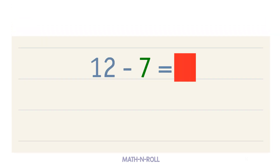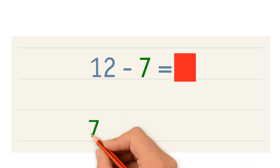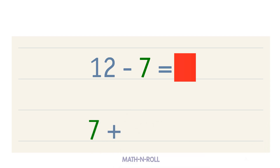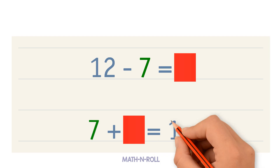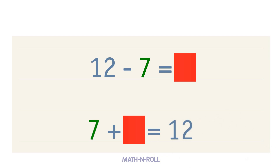Let's do another one. 12 minus 7 equals blank. Write the related addition fact. 7 plus blank equals 12.